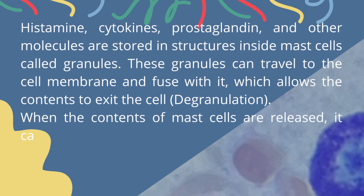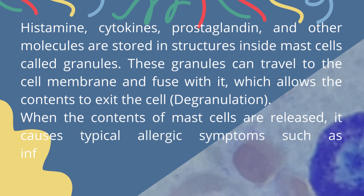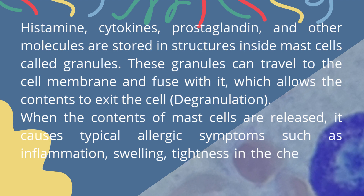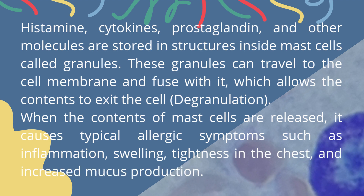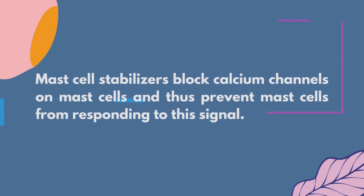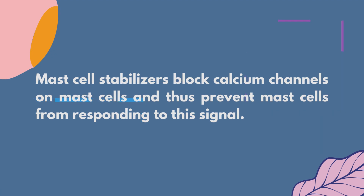This is termed degranulation. When the contents of mast cells are released, it causes typical allergic symptoms such as inflammation, swelling, tightness in the chest, and increased mucous production. Mast cell stabilizers block calcium channels on mast cells and thus prevent mast cells from responding to this signal.